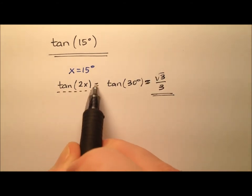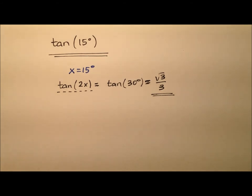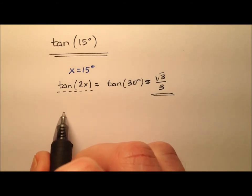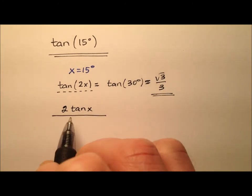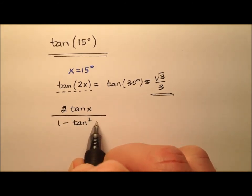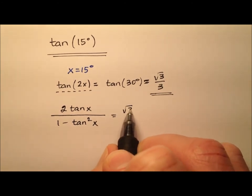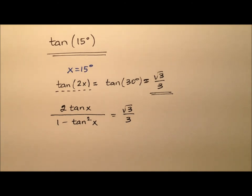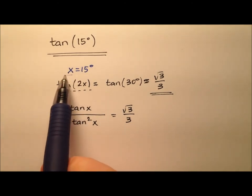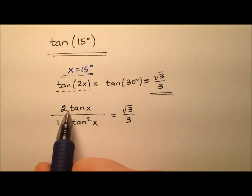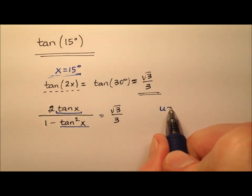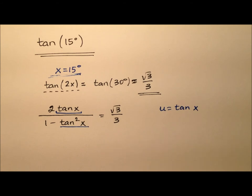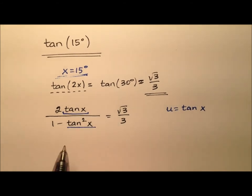This tangent of 2x — let's go ahead and use a double angle identity and exchange it for something else. So let's use the double angle identity that says twice tangent of x over 1 minus tangent squared x, and that equals our square root of 3 over 3. We know that x equals 15 degrees, so tangent of x refers to tangent of 15 degrees. So I'm going to say u equals tangent of x, and I'm going to make this exchange.